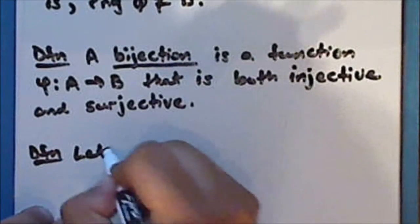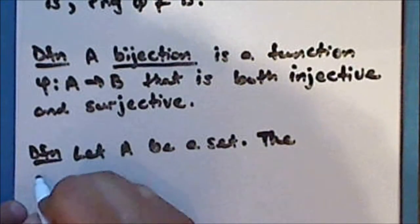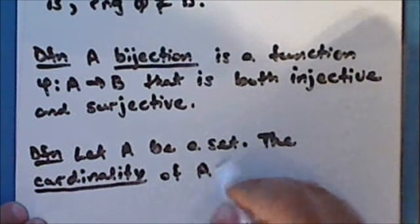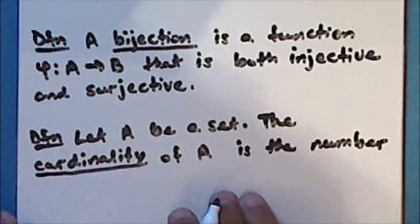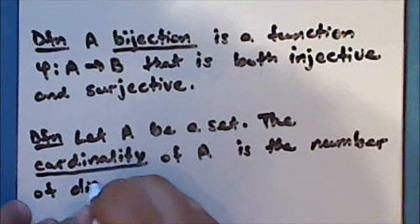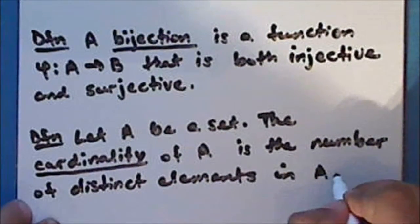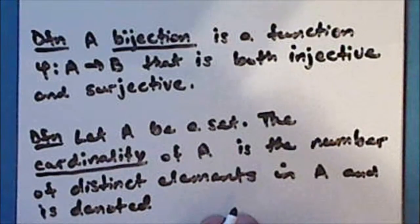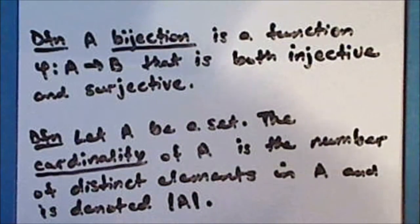New definition: let A be a set. The cardinality of the set A is the number of distinct elements in the set A, and is denoted by placing vertical bars around A — the same symbol as absolute value. This is called the cardinality of A.